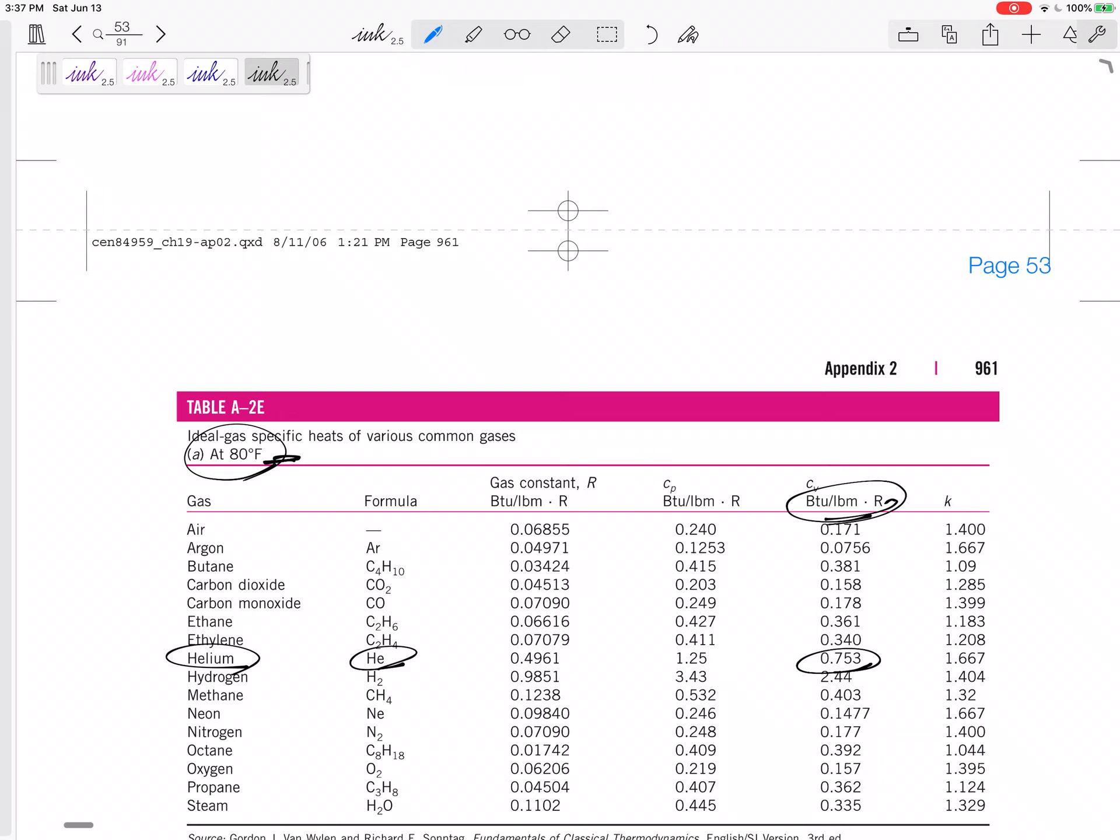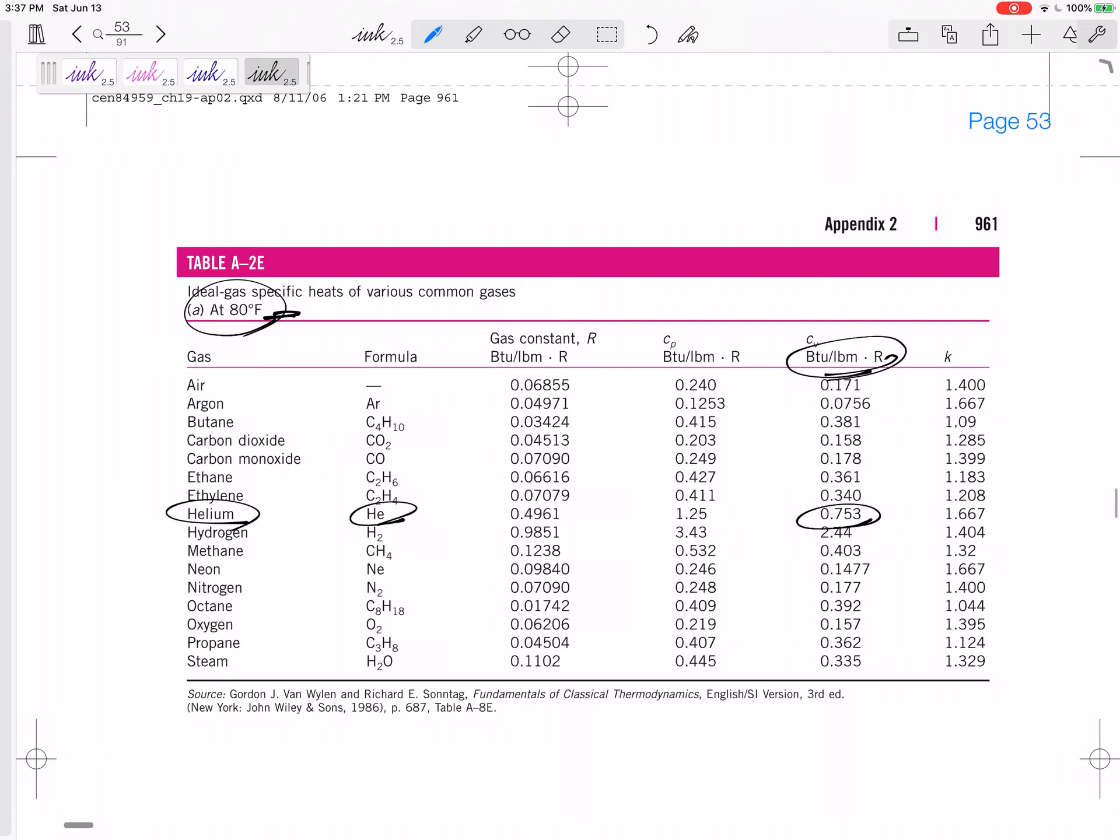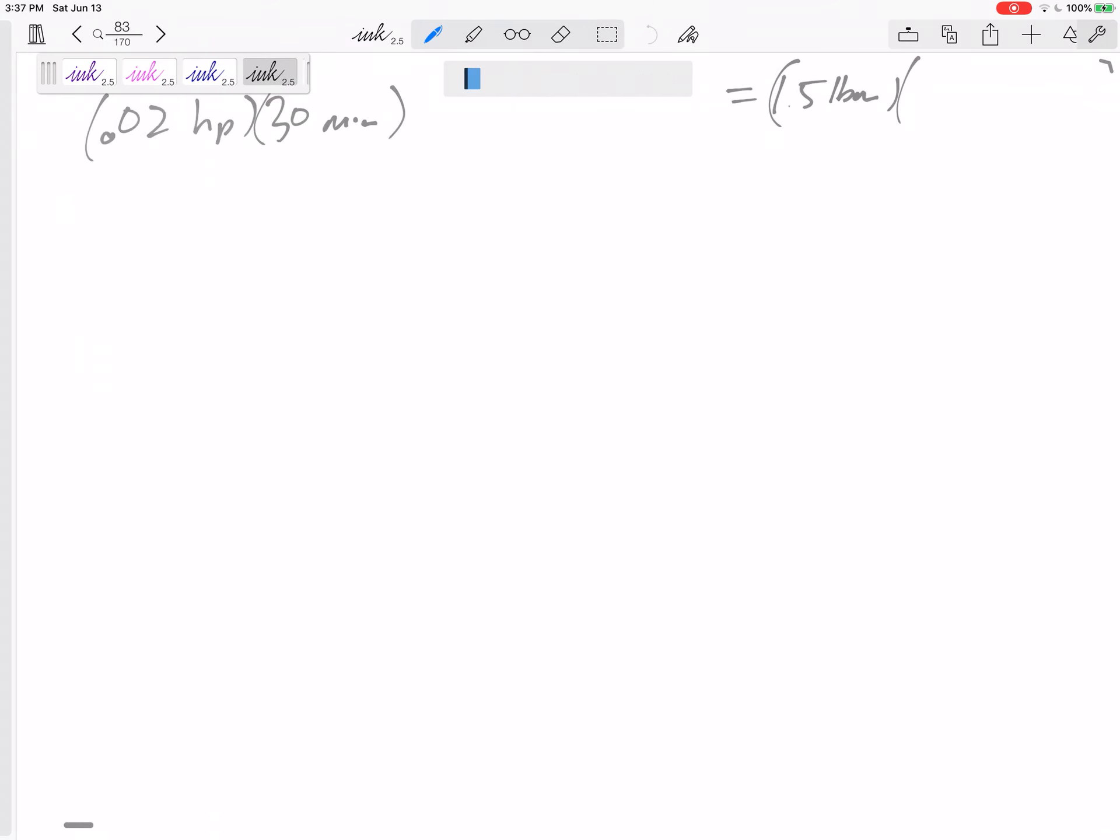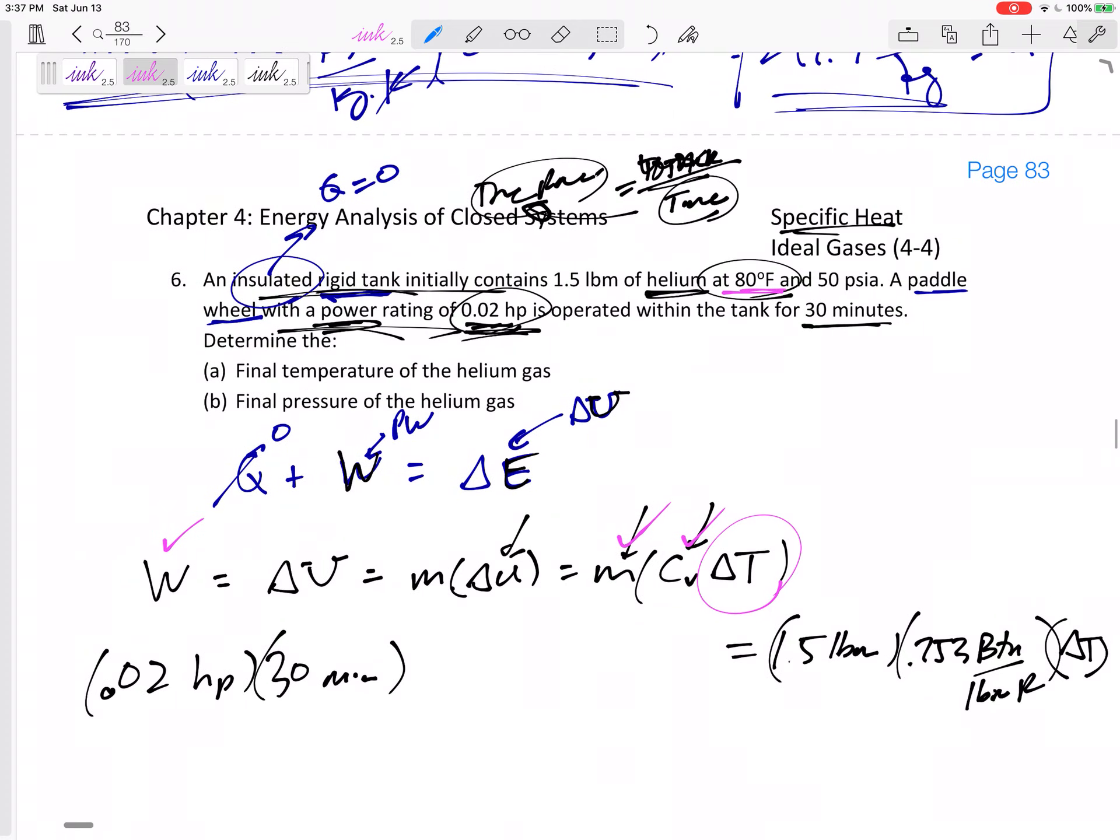Now it's going from 80 to something higher, so we can just use that at 80 degrees Fahrenheit. Go back to our notes. Use 0.753 BTU per pound mass rankin' delta T. So I'm going to solve for delta T because I know everything else. I know work. I know mass, Cv. I'm going to solve for delta T, add it to 80 degrees.